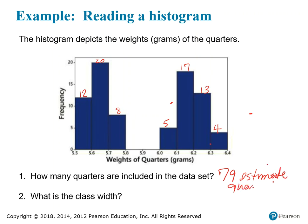The estimated number of quarters is about 79. The class width appears to be 0.1 grams. Regarding the gap visible in the histogram, it's likely for a similar reason as the pennies problem — the composition of materials used to create quarters varied over the years. Depending on which years of quarters were included in the count, that gap between the two groups of bars could reflect the different compositions.